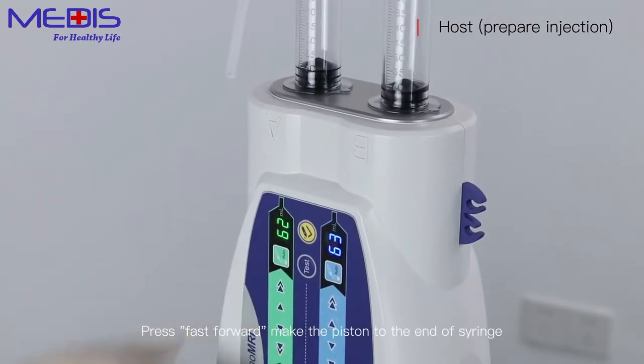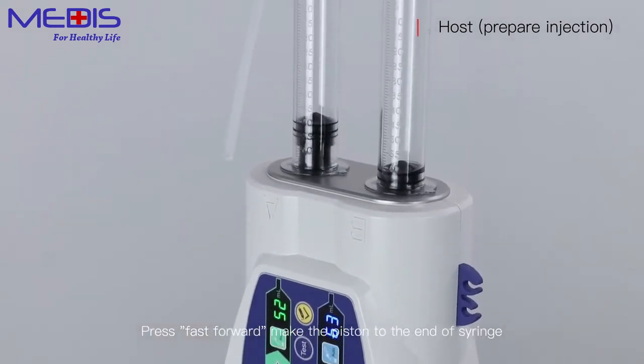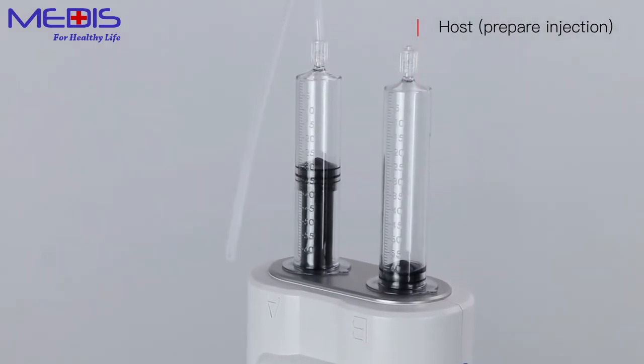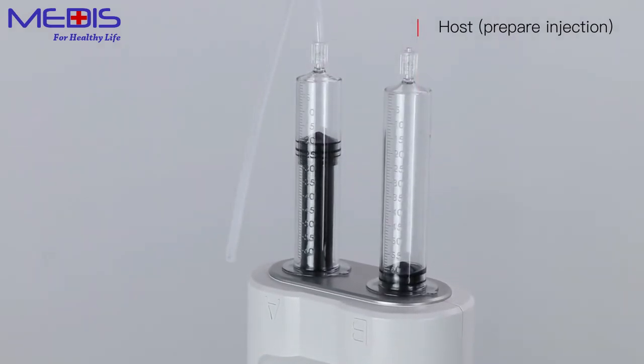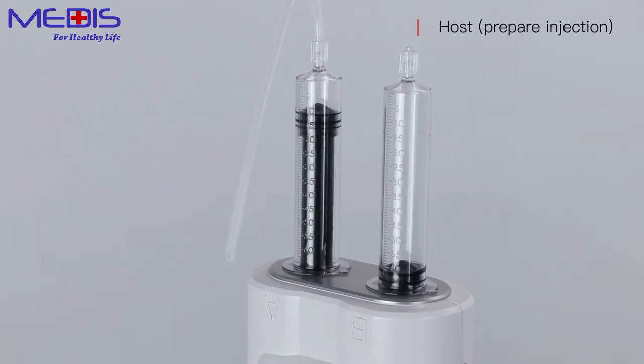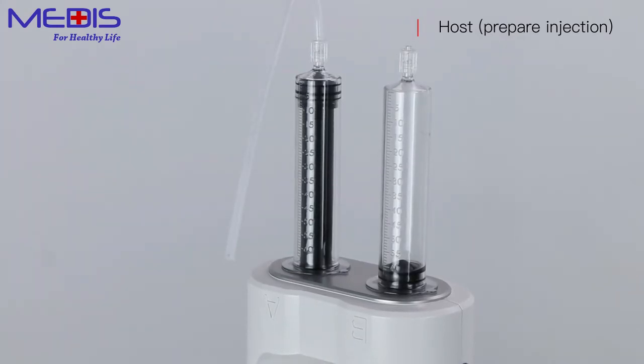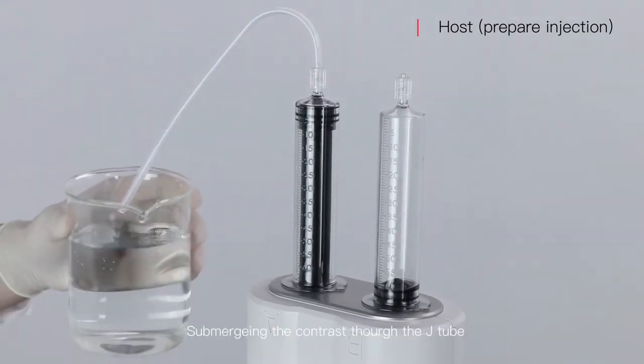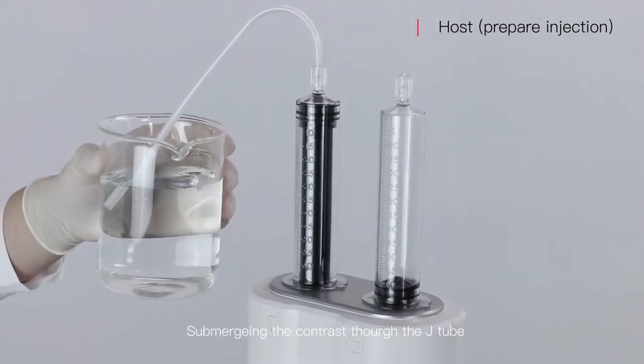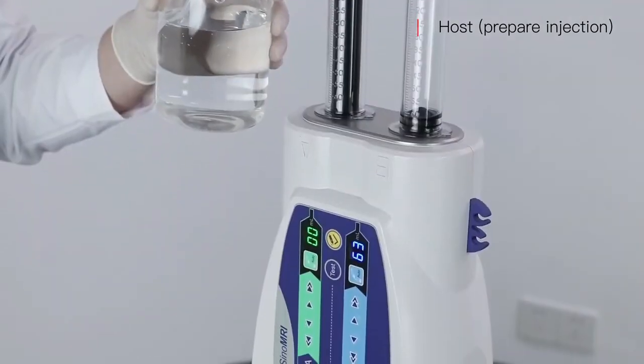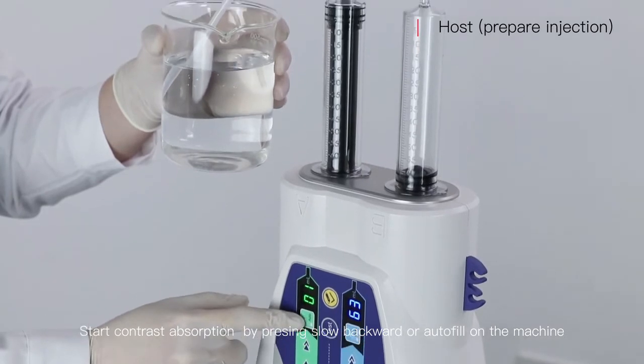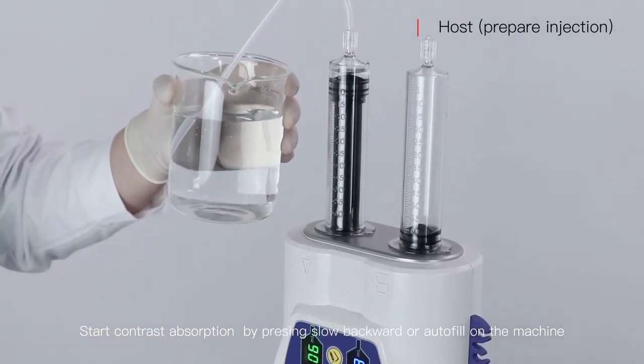Press fast forward to make the piston go to the end of the syringe. Submerge the contrast through the J-type. Start contrast absorption by pressing slow backward or autofill on the machine.